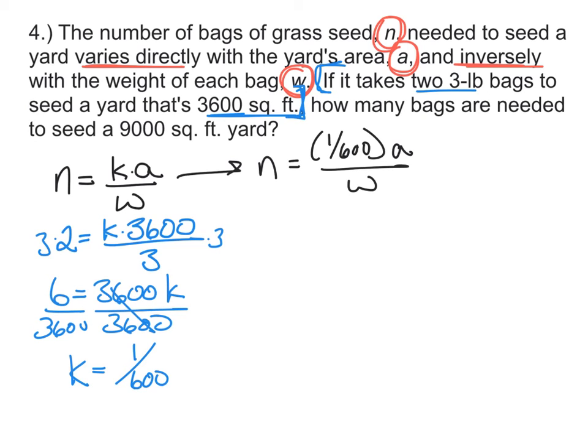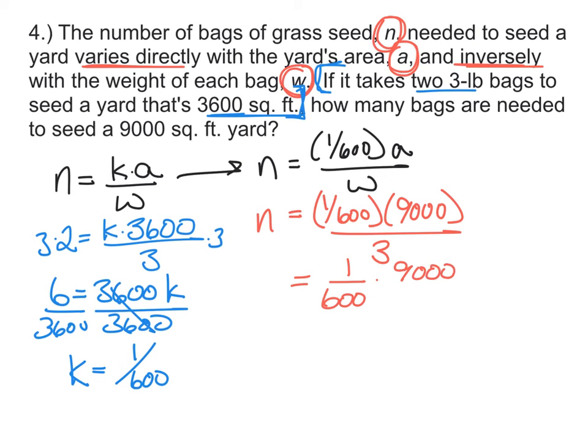Now, we can go back to the question and actually figure something out. How many bags are needed to seed a 9,000-square-foot yard? Well, since we've got 9,000 square feet, that's our area. The weight of the bag hasn't changed at all. It's still going to be three-pound bags. So the only thing that's left is to figure out how many bags there are. And so now it's just a matter of calculating. One over 600 times 9,000 and divided by three is the same as multiplying by one-third. So we can do a little canceling here. Take 100 out of there. Three out of there. That would leave us with 30. And 30 divided by six is going to equal five. Five bags of seed is what's going to be needed.